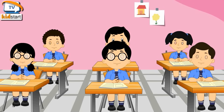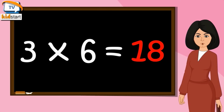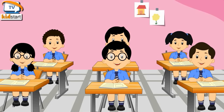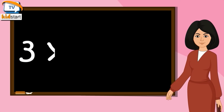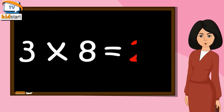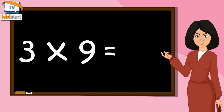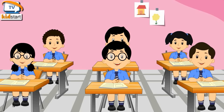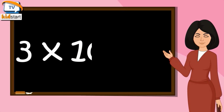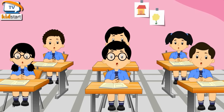Three Sixes are Eighteen. Three Sevens are Twenty One. Three Eights are Twenty Four. Three Nines are Twenty Seven. Three Tens are Thirty.